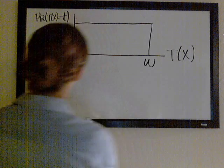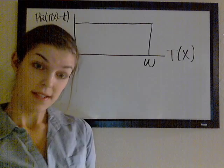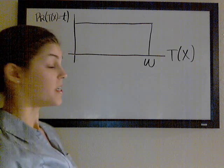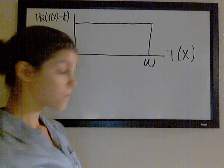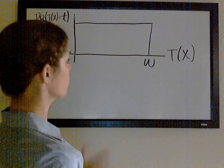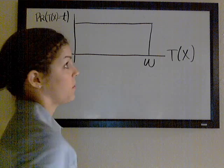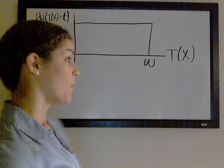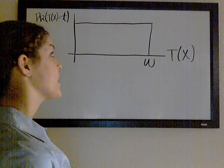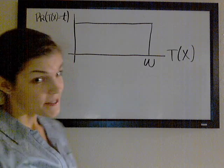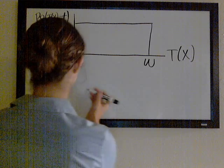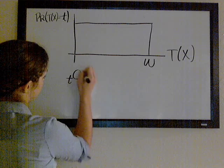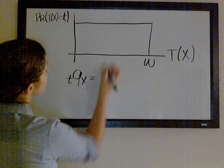We might want to know some different things about x, now that we know how his future lifetime is distributed. We might want to know, for example, if we're really pessimistic, the probability that he fails to live t years. We know that that's denoted by tqx.